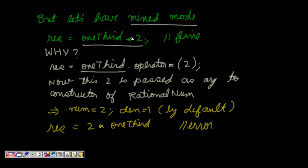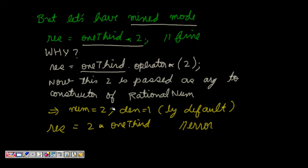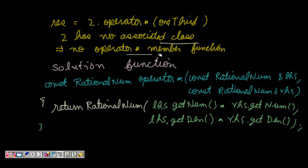This works because oneThird.operator*(2) is called on the class. But what if we write 2 * oneThird instead? The integer 2 is not a class, so there is no associated class and no overloaded operator* method to call with oneThird as the argument. We get an error — no associated class for 2, and hence no operator* overloaded method.